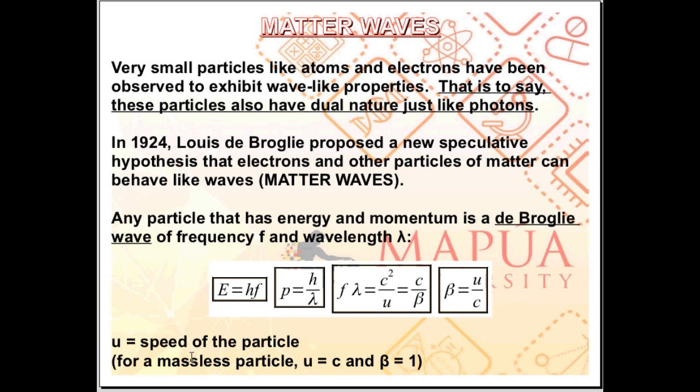U is the speed of the particle. For a massless particle like a photon, U is just equal to C, which means U divided by C, C divided by C, beta is just equal to 1. So, for a photon, F lambda is just equal to C.